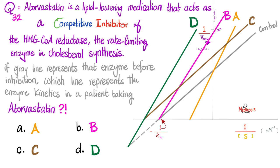So among lines A, B, C, and D: A is the competitive inhibitor, B is the non-competitive inhibitor, C is the uncompetitive inhibitor, and D is the mixed inhibitor.